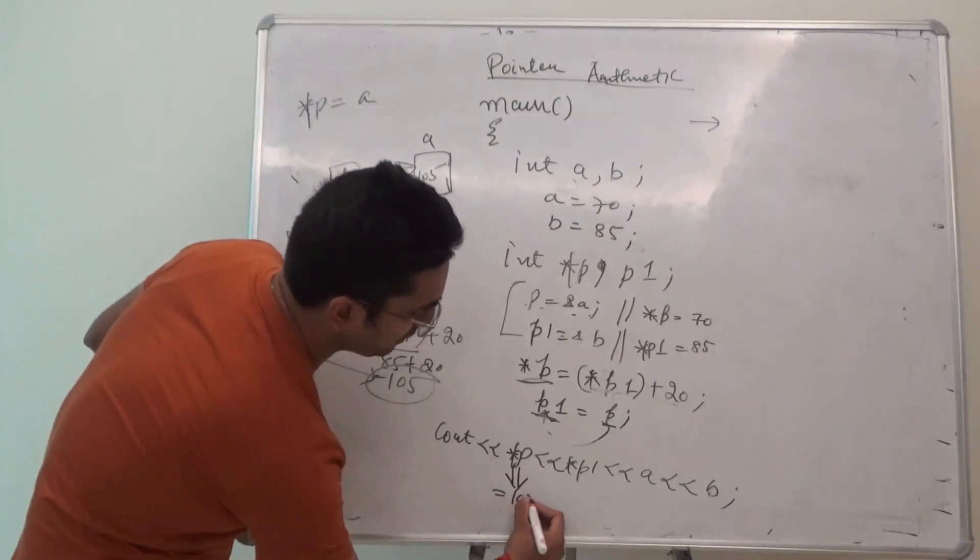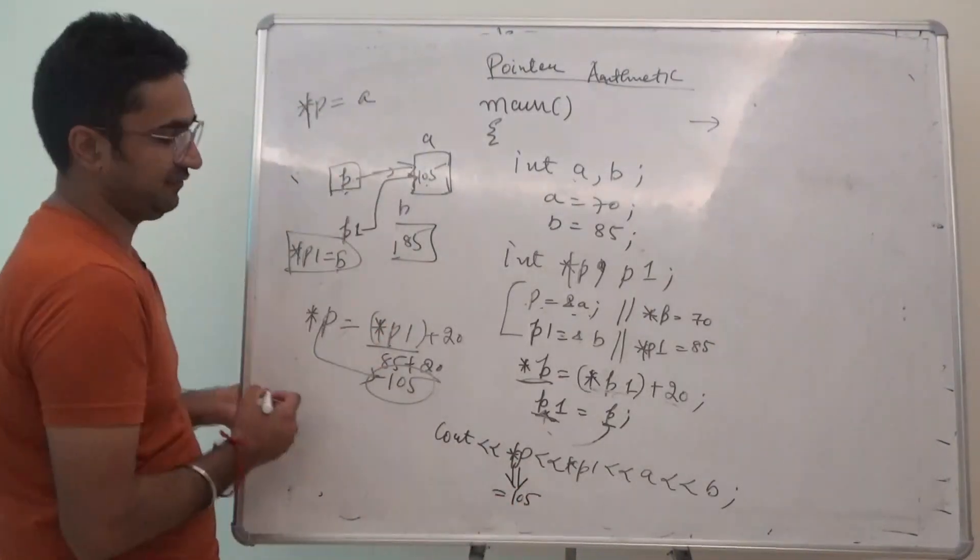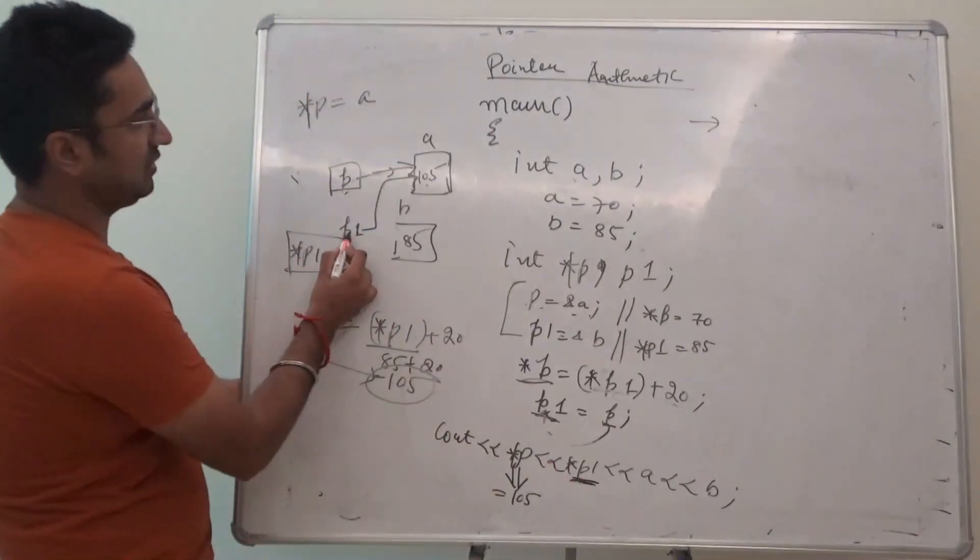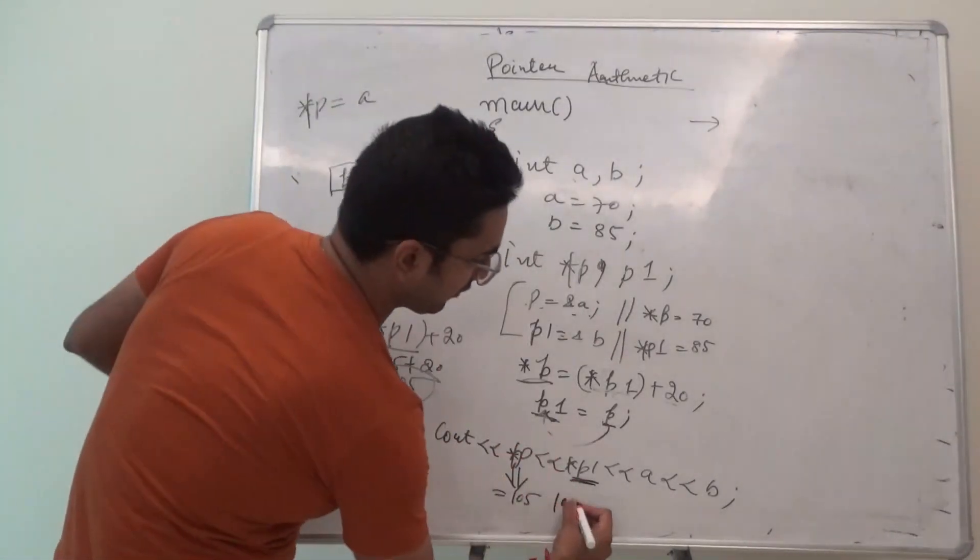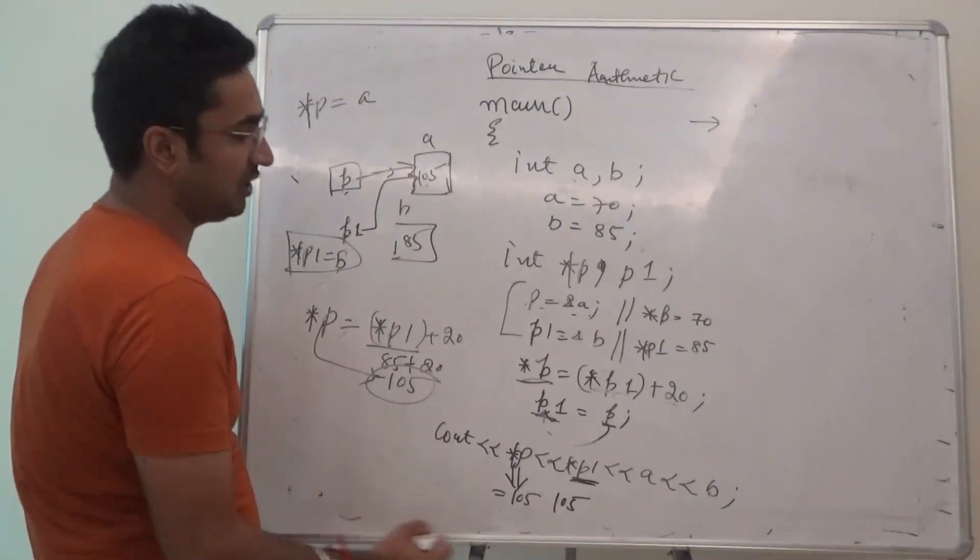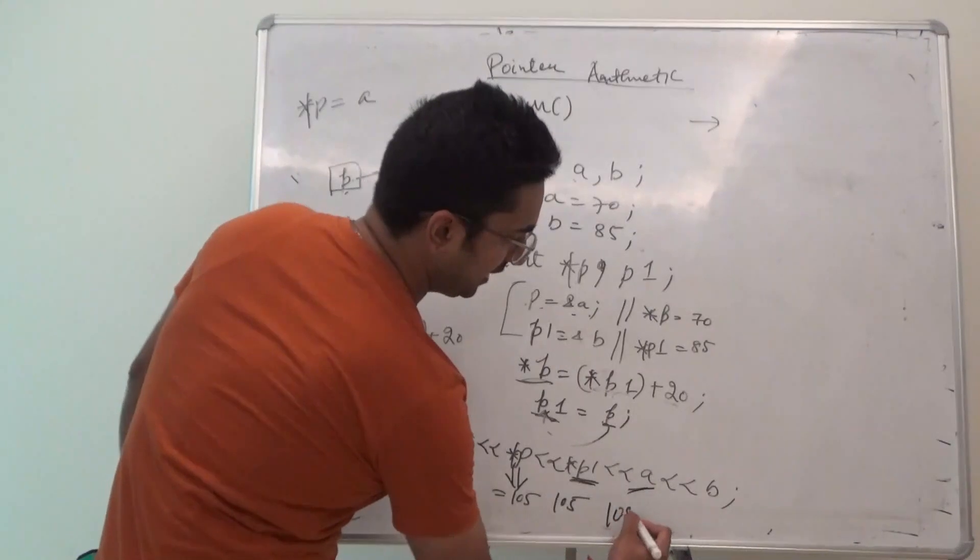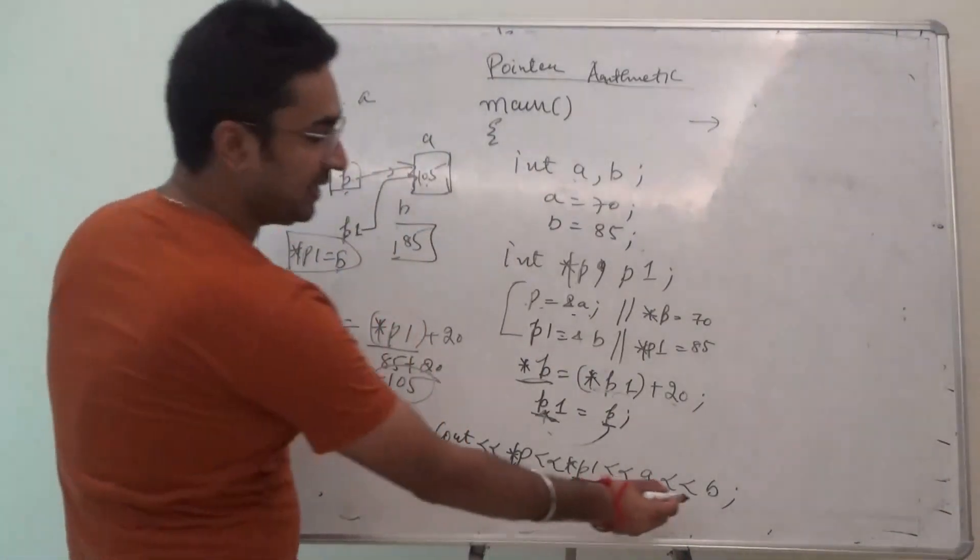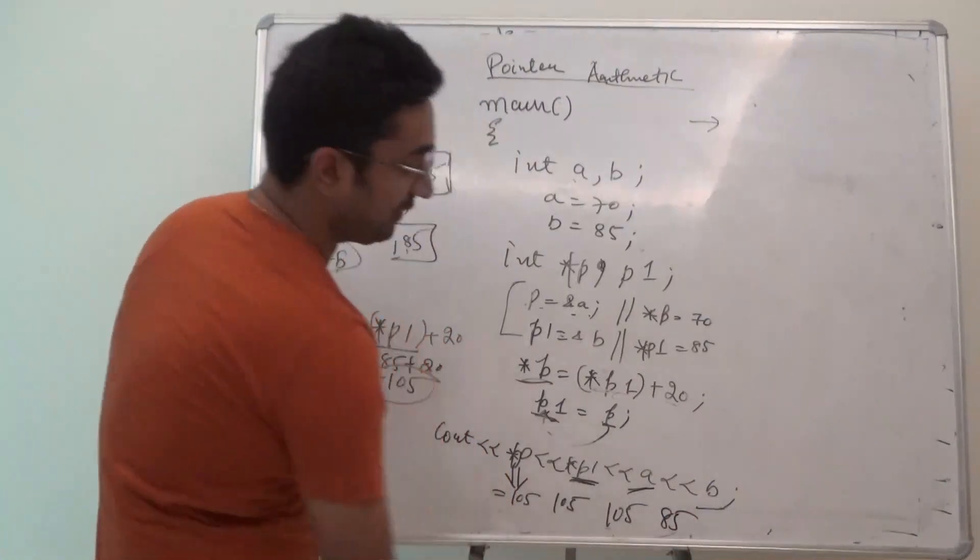Now, I want to display this. Star of p, obviously p is pointing towards 105. Star of p1, guys, p1 is also pointing towards 105. 105 is taken. Then, a value, we all know, has been updated to 105. And, b value is unchanged. The answer is 85.